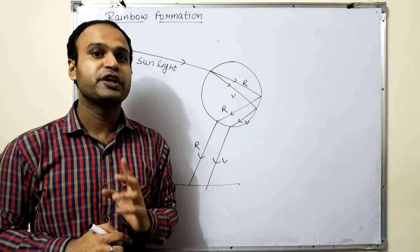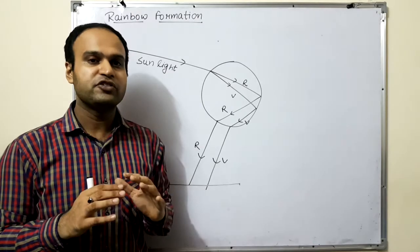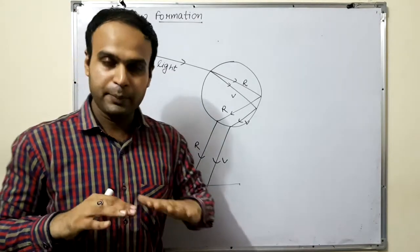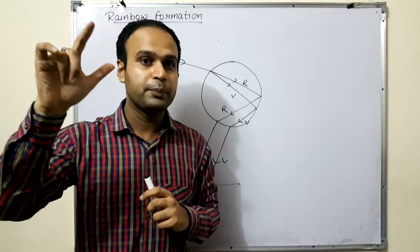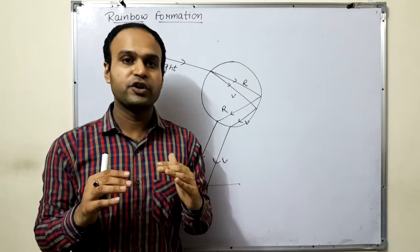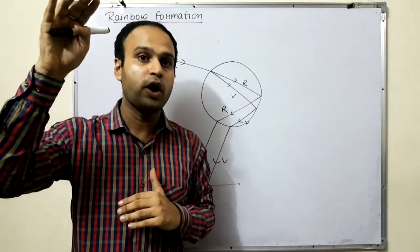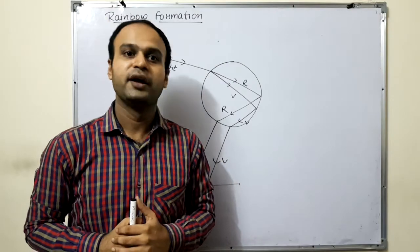But there is a condition for rainbow formation. That condition must be that the rainbow will appear in the sky if the sun appears behind the observer.